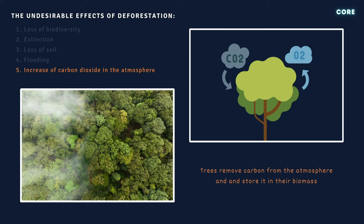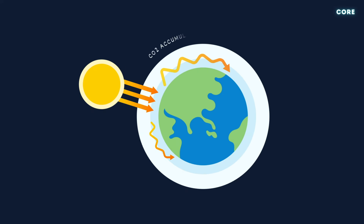Number five: carbon dioxide. Forests are carbon sinks, absorbing carbon dioxide from the atmosphere through photosynthesis and storing it in their biomass. When forests are cleared through deforestation, the stored carbon is released back into the atmosphere. A popular theory of climate change suggests that this increase in carbon dioxide is contributing to global warming by trapping heat in the Earth's atmosphere.